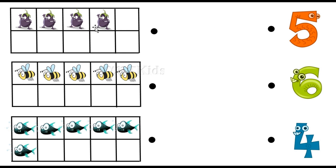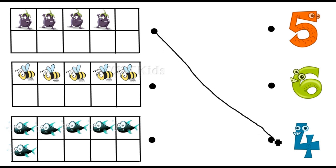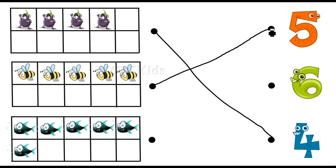How many brinjals here? One, two, three, four — four brinjals in this tens frame. How many bees here? One, two, three, four, five — five bees in this tens frame.